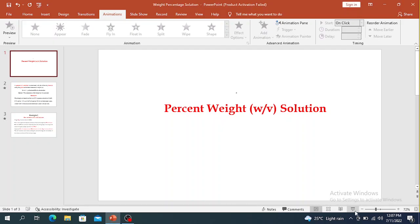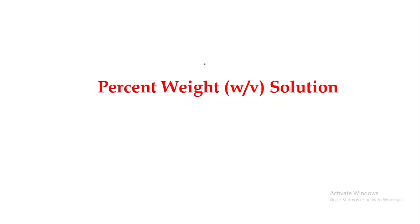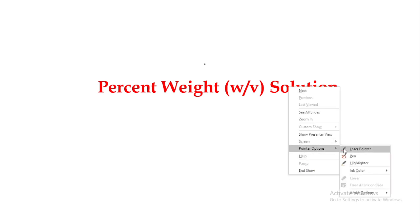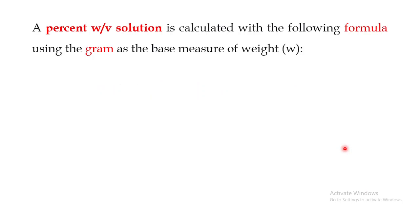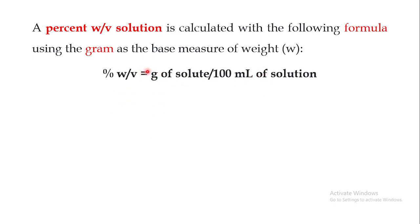Welcome back to this next video. This is a quick video on the percent weight by volume solution. If you are interested in determining the percent weight by volume solution, it is calculated using the following formula, using grams as the base measure of weight. This formula is used to determine the percent weight by volume of solution: grams of solute per 100 ml of solution.